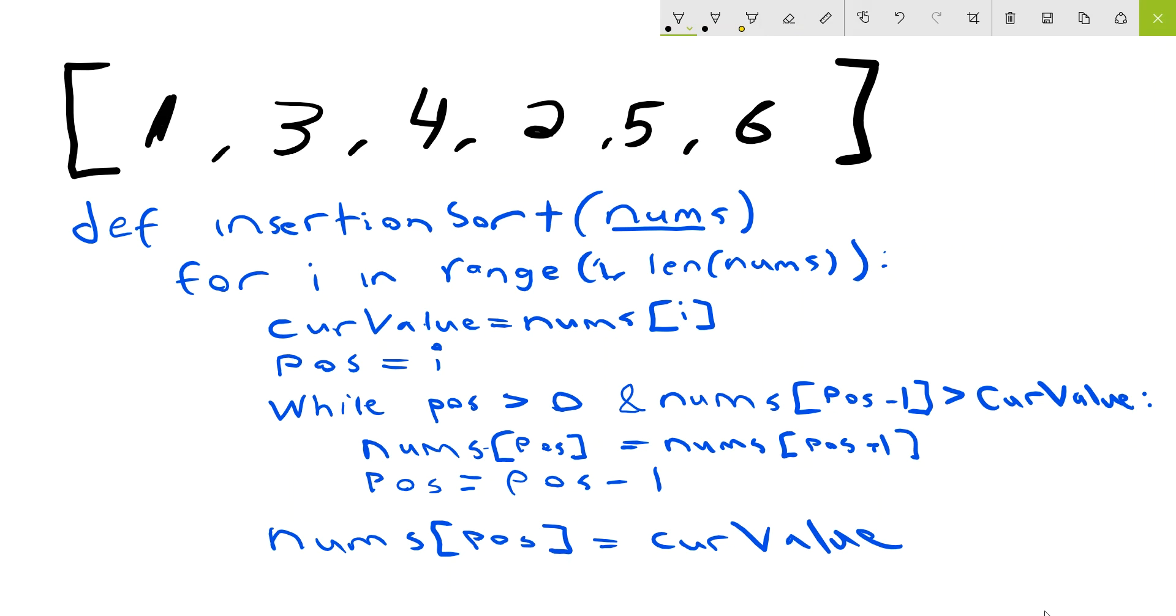Okay, so just to go over the pseudocode and look at one iteration, let's imagine that we were at index value of 3. So we get the current value at position 3, which is 2. And we're just storing position in i, or as i, so 3. So i is equal to 3 right now. So while position is greater than 0 and the numbers of position minus 1 is greater than current value, so position minus 1 is 3 minus 1, so that equals 2.